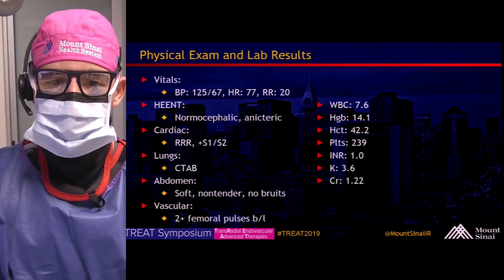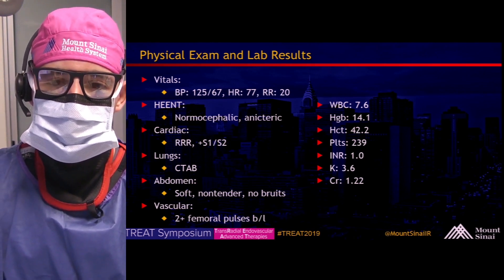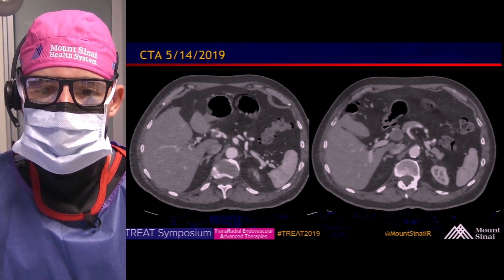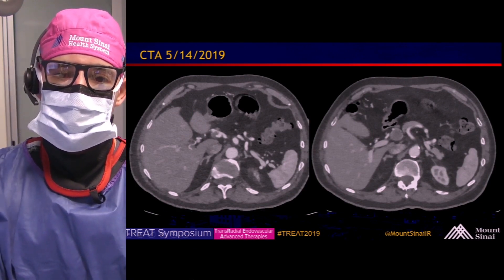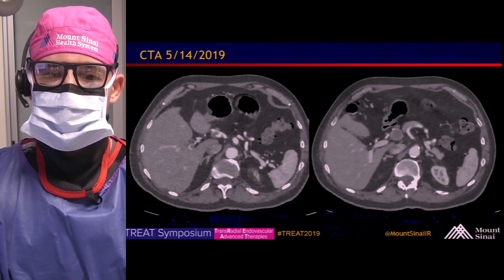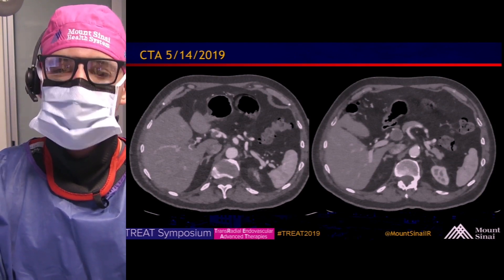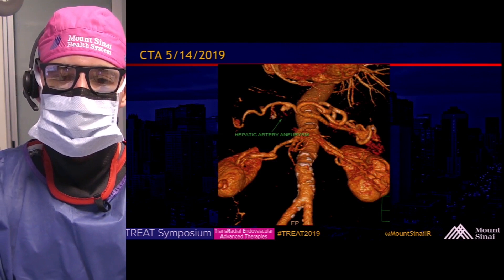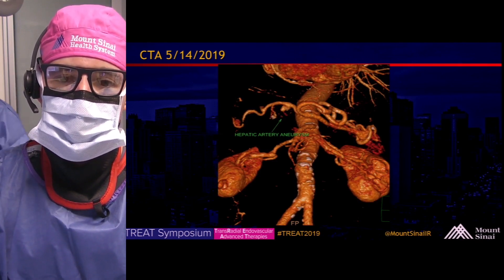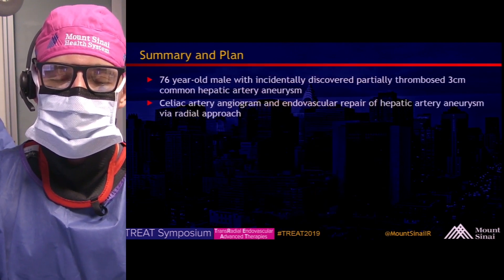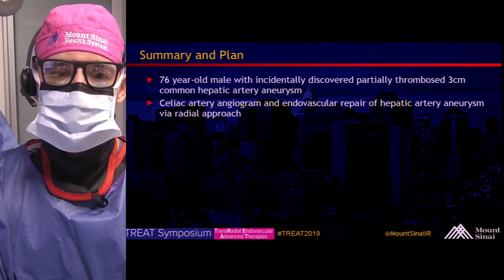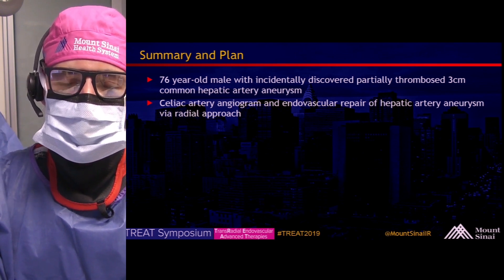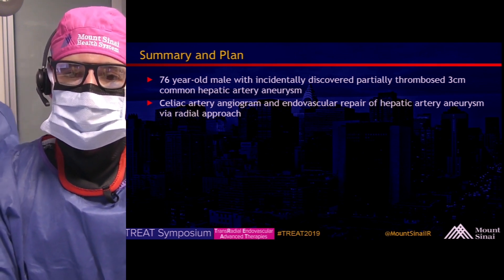His physical exam is within normal limits and labs are shown on screen. The CTA from May 14th shows two axial slices through the abdomen demonstrating a partially thrombosed three-centimeter hepatic artery aneurysm off the common hepatic artery, with 3D reformats also available. In summary, this is a 76-year-old male with an incidentally discovered partially thrombosed three-centimeter common hepatic artery aneurysm. The plan today is a celiac artery angiogram and endovascular repair with stent-assisted coiling.